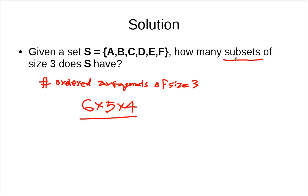And in this number we overcount the number of subsets, right? Because for each subset, say subset BEF, it can be counted many times. How many times can this subset be counted inside this?